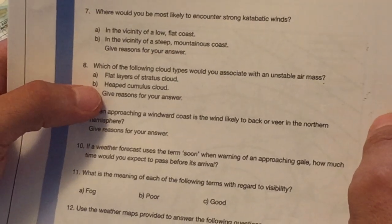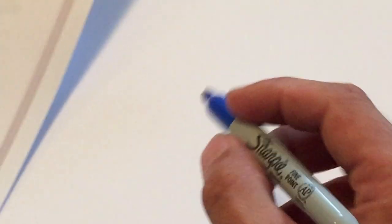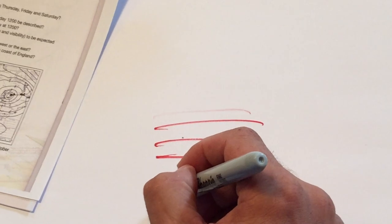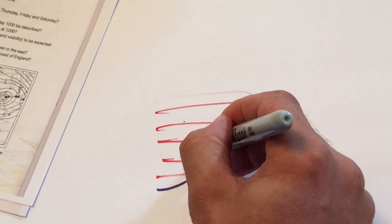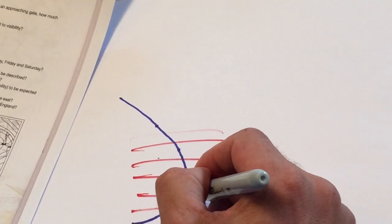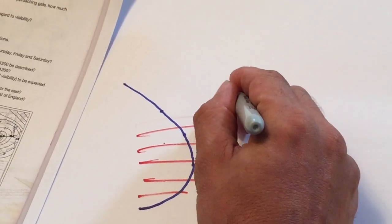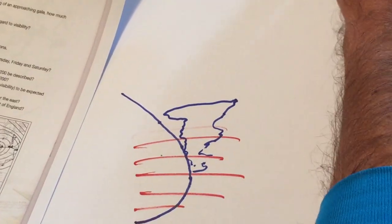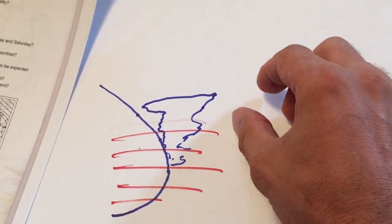Which of the following cloud types would you associate with an unstable air mass? Flat layers of stratus cloud. Okay, well definitely not. Because flat layers of stratus cloud rarely bring rain. Heaped cumulus cloud. Give reasons for your answer. Okay, heaped cumulus clouds for sure. And what that makes me think of is a cold front, right? You've got your warm air here. Right? Warm air here. Your cold front comes in quickly and it comes in suddenly. And it plows right under the warm air. Okay, and what that does is it forces any clouds that are here to build up. And it builds up quickly into that typical anvil shaped thing. And that's where you, of course, get the hail, thunder, lightning, downpours, all of that kind of stuff.